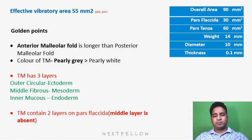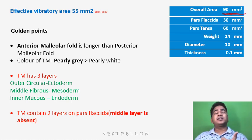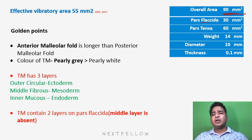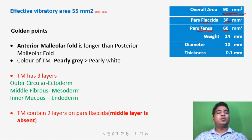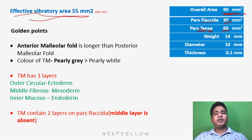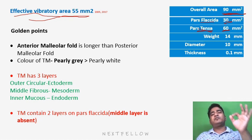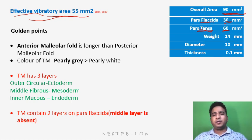The total area of the tympanic membrane is 90 mm². This is important and has been asked in the exam. Pars flaccida is one-third, so approximately 30 mm², and pars tensa is two-thirds, so approximately 60 mm². If the examiner asks about the effective vibratory area of the tympanic membrane, it is 55 mm². So the tympanic membrane is at an angulation of 55 degrees with an effective vibratory area of 55 mm².